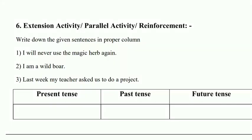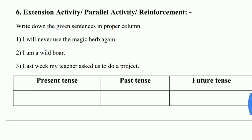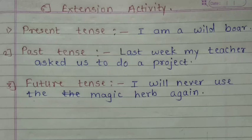Under the extension activity — reinforcement — write down the given sentences in the proper column. For example: 'I will never use the magic hub again' is future tense. 'I am a wild boar' is present tense. Last week my teacher asked us to do a project — that is past tense. 'I will never use the magic hub again' — future tense.